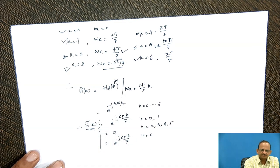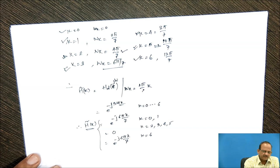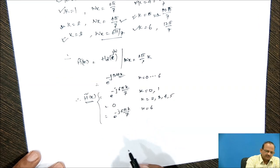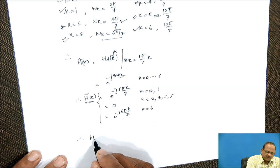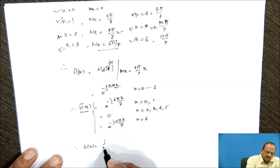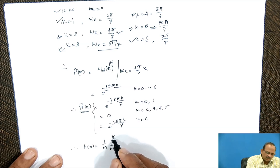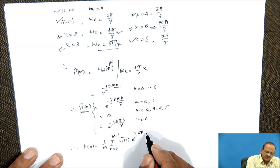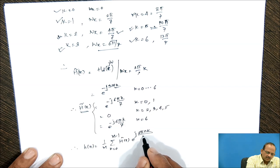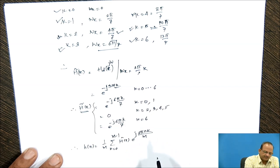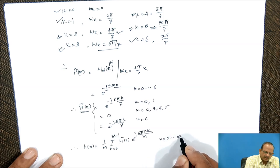In the frequency sampling method, we obtain the impulse response h(n) by taking the IDFT of H(k). So h(n) = (1/M) · Σ_{k=0}^{M−1} H(k) · e^{j2πnk/M}, for n = 0 to M−1.